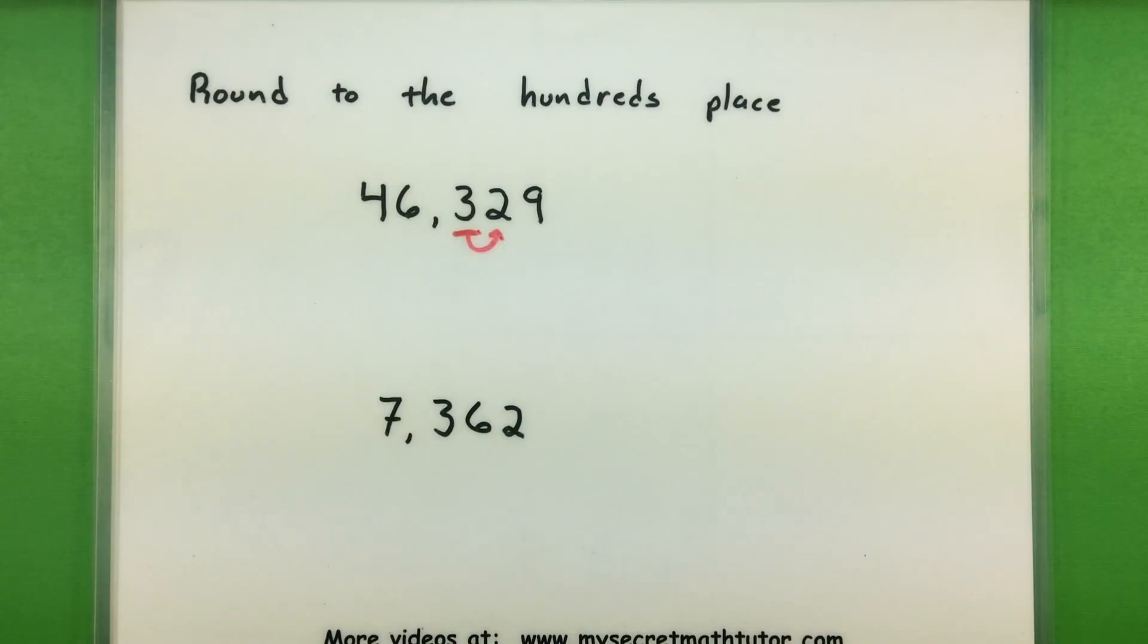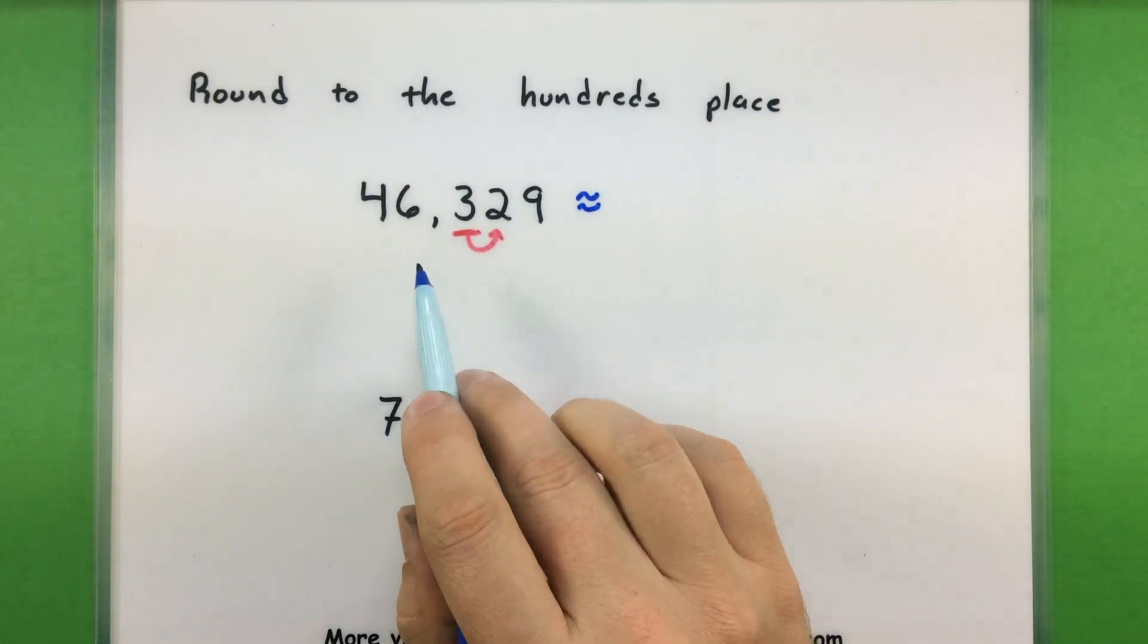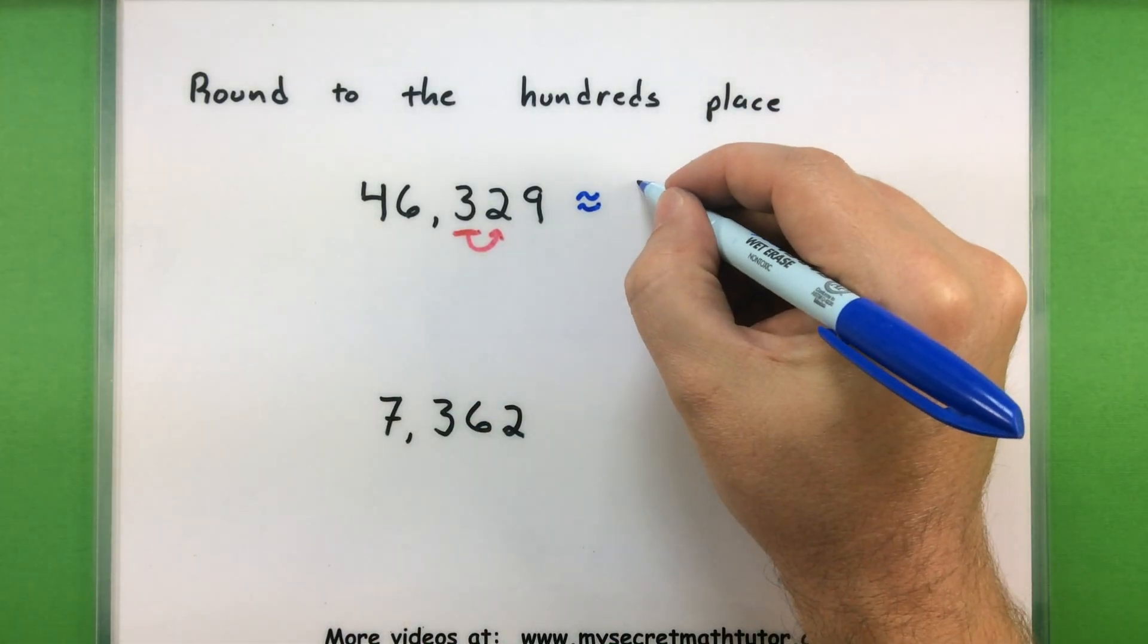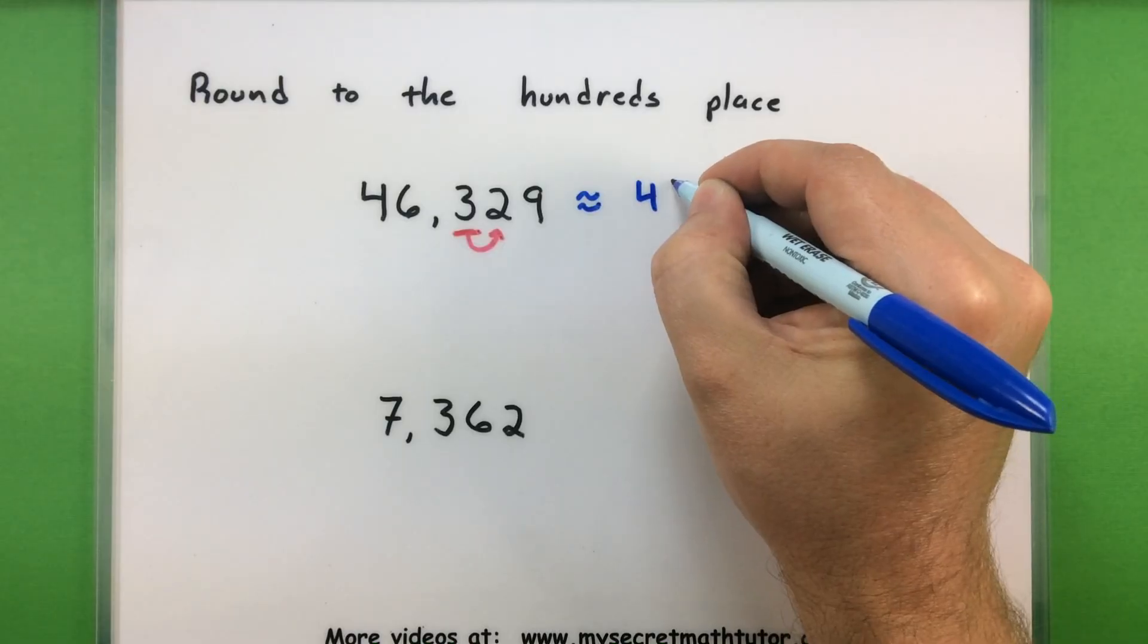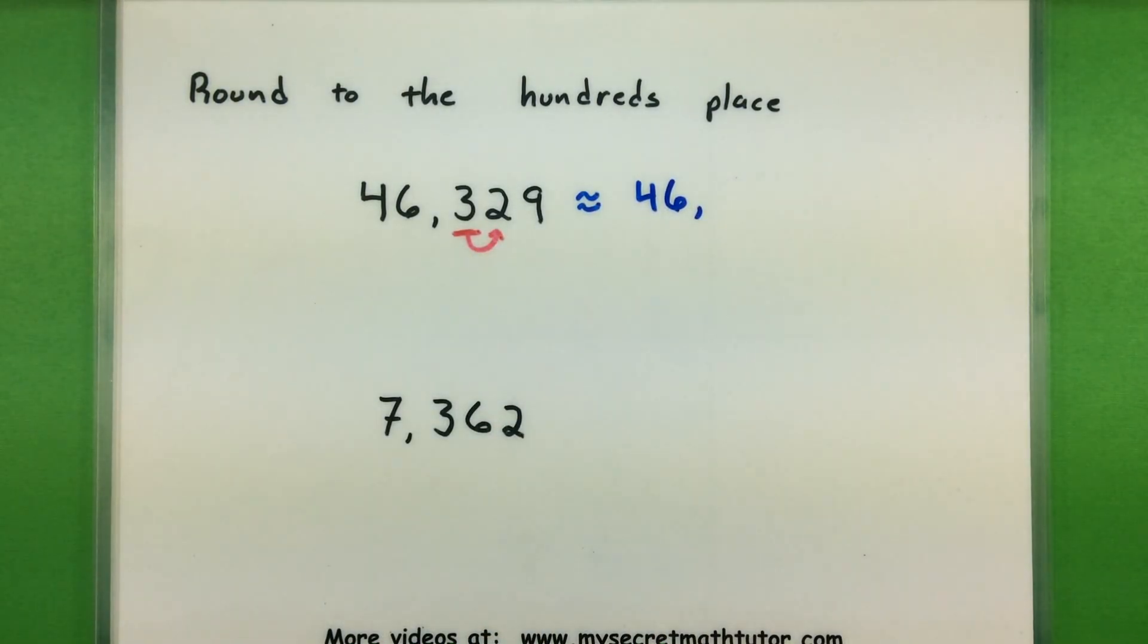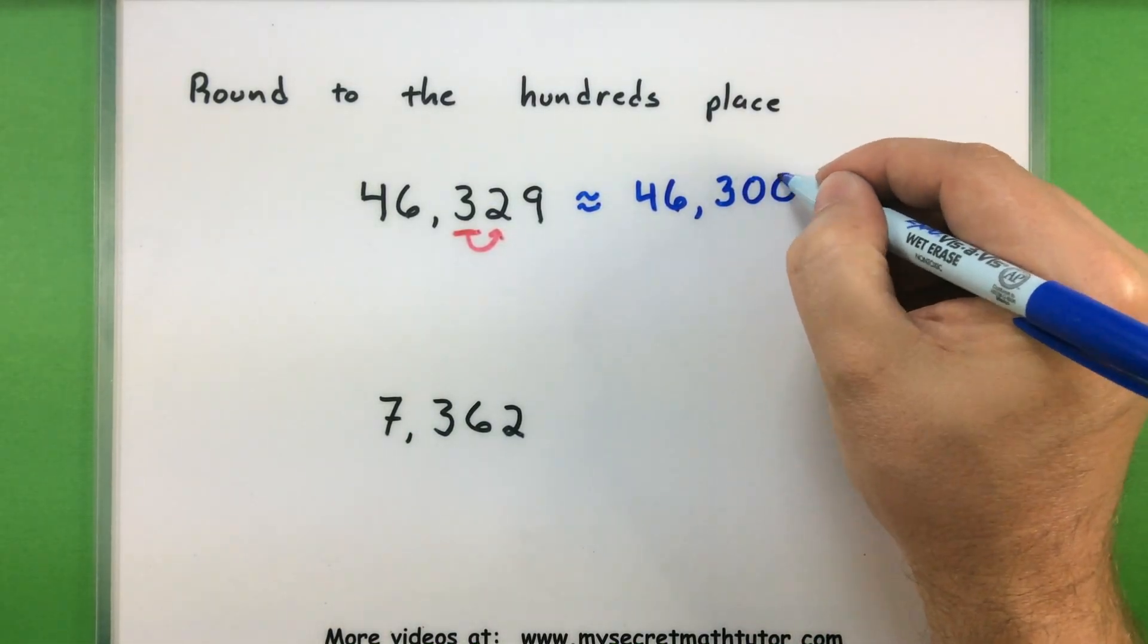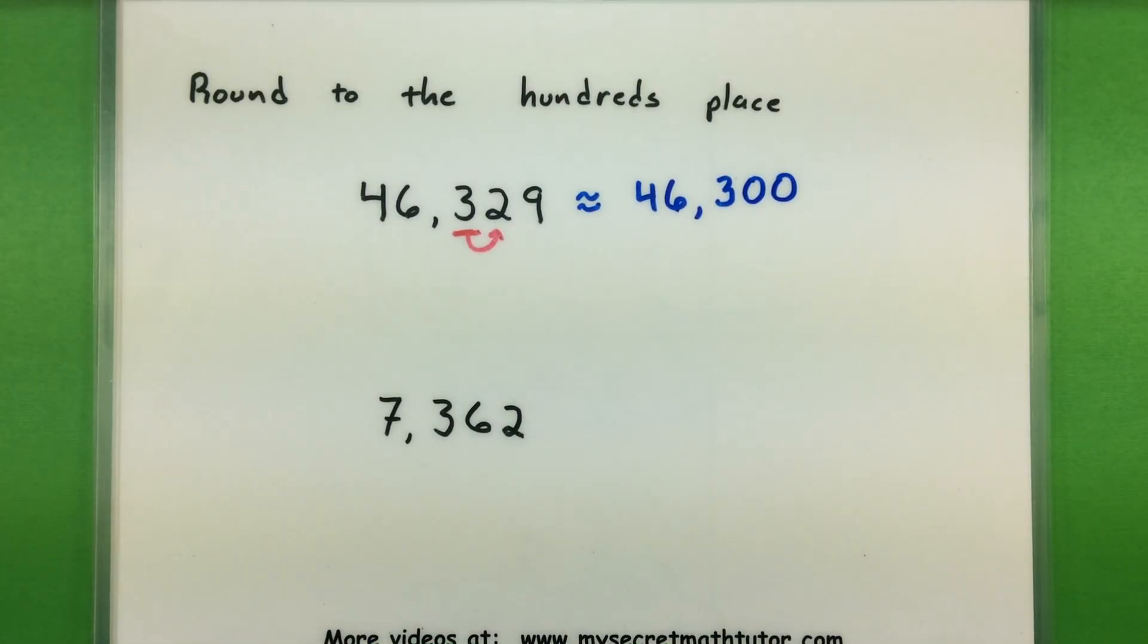In this number we see that it's a 2, so I actually want to round this number down. What's that going to mean for us? Well, it means everything to the left is not going to be changed. So I'll still have a 4, I'll still have a 6. Since this is being rounded down, we'll keep the 3 exactly the same and we'll put in zeros for everything else to the right. So rounded to the hundreds place, this is now 46,300.